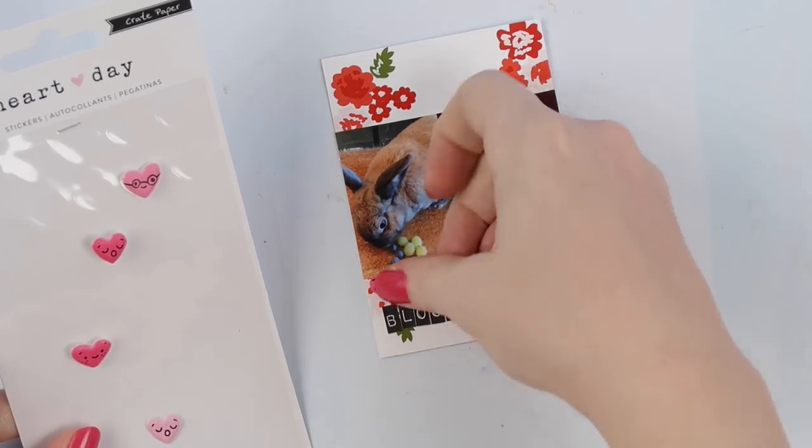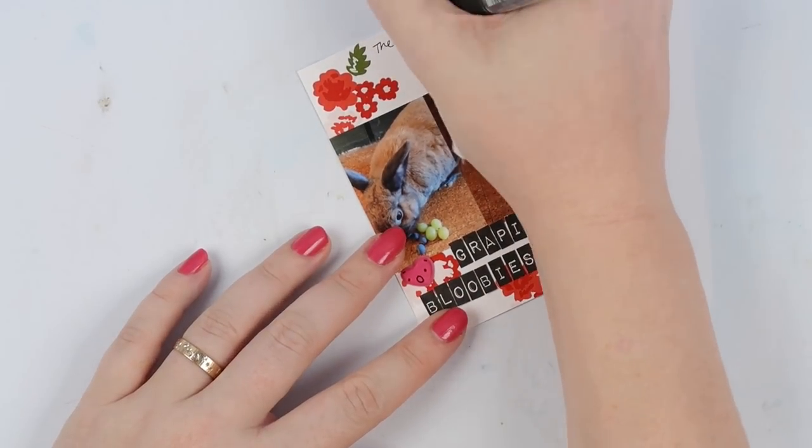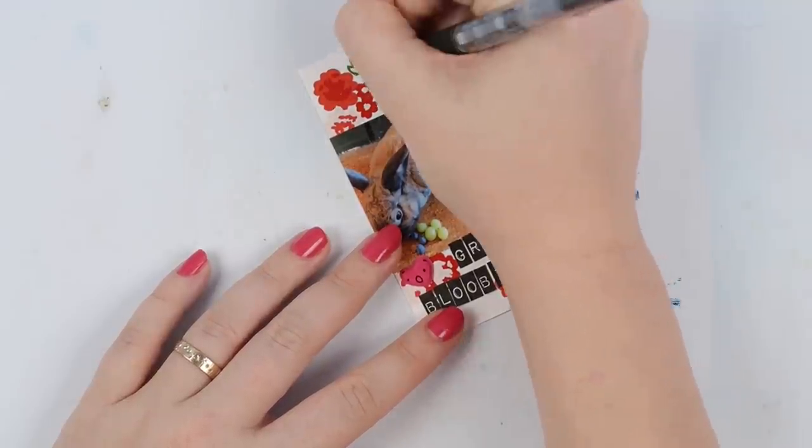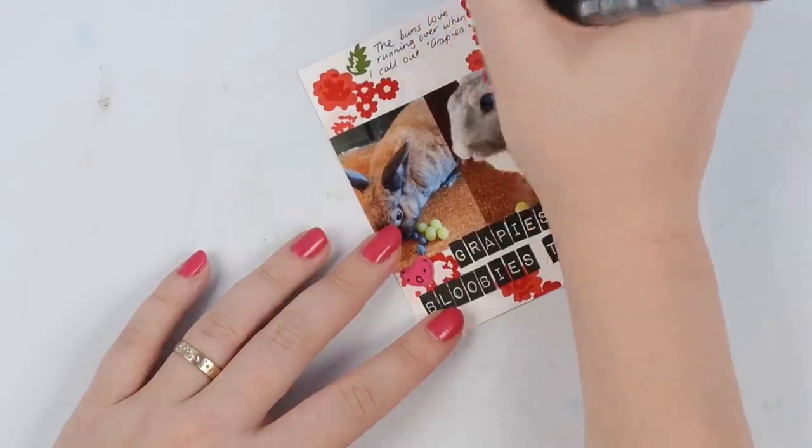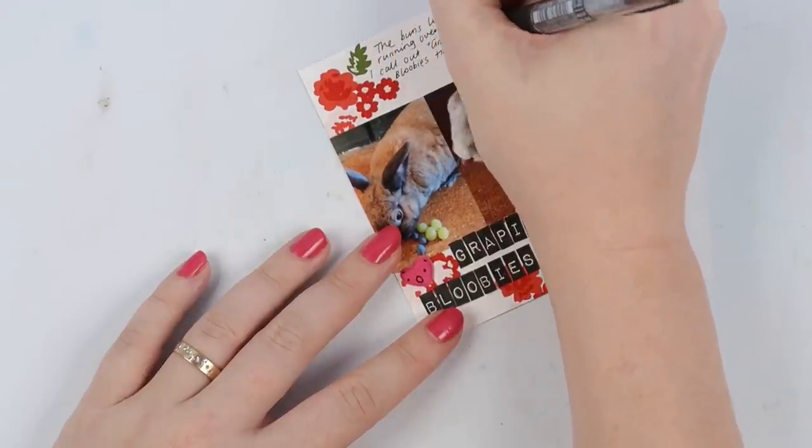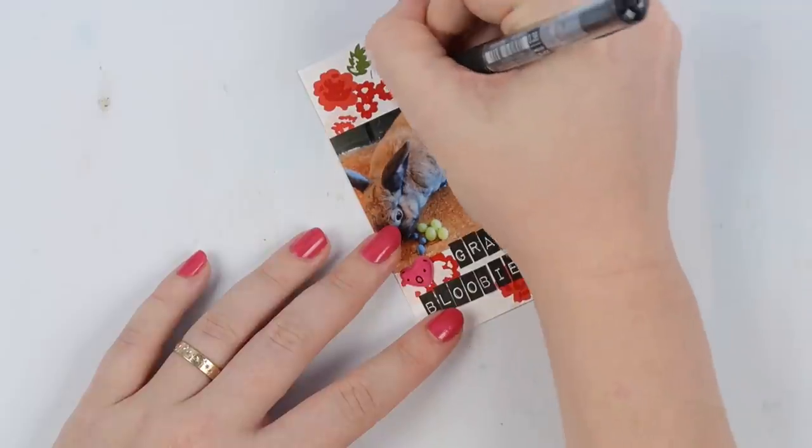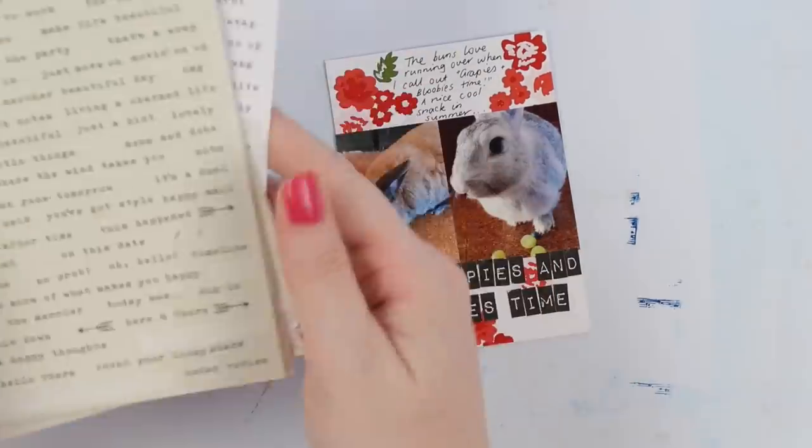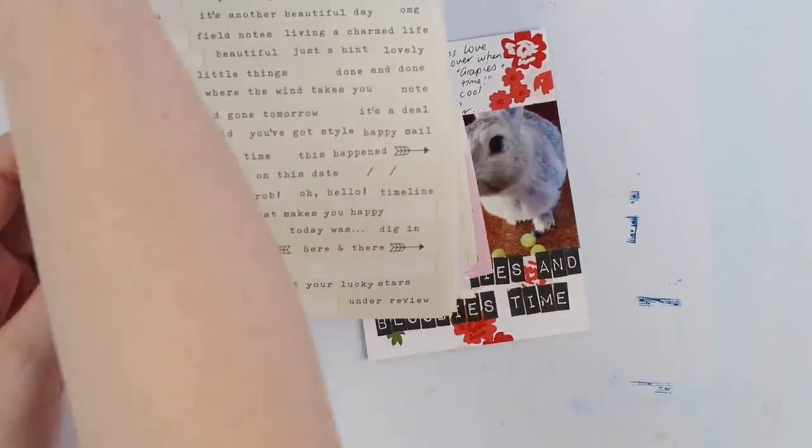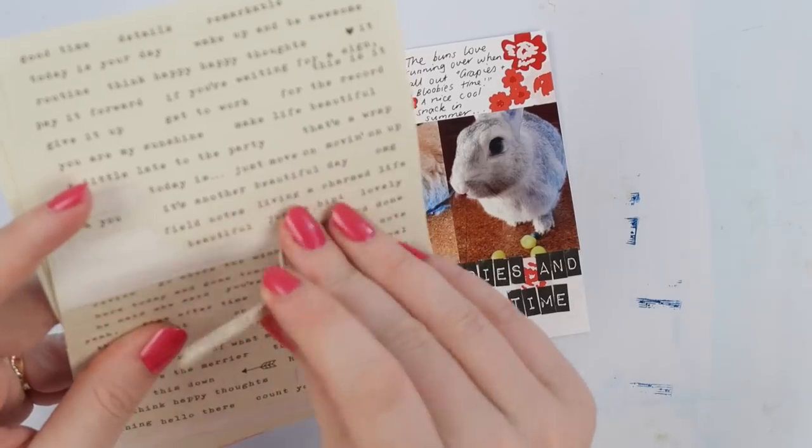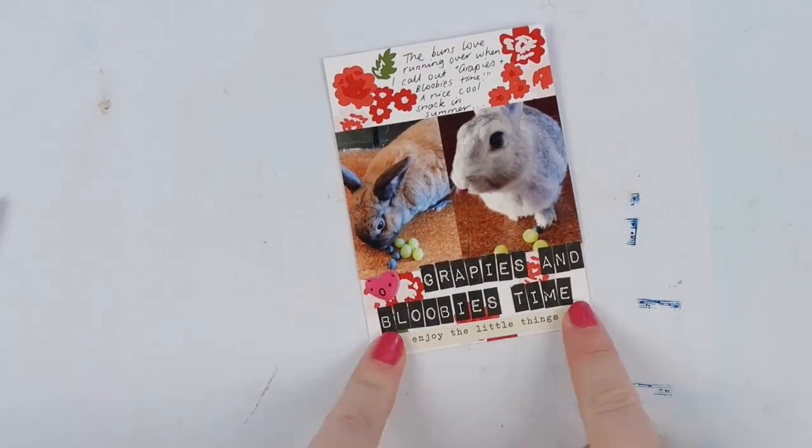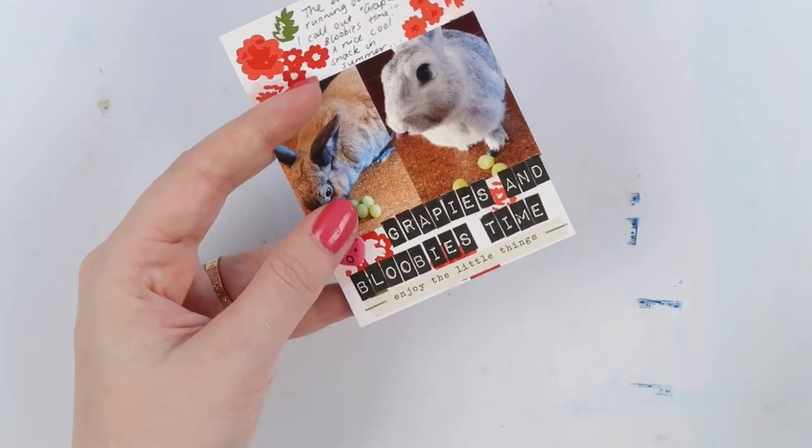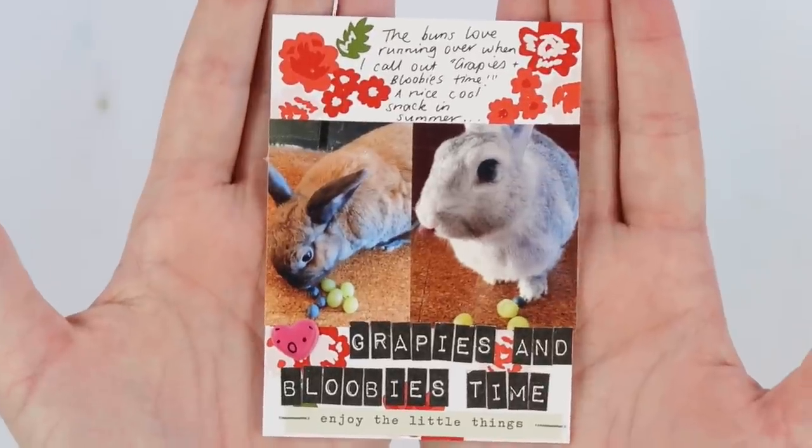This is a photo of the bunnies of course, and this layout is actually from the very end of spring so it was getting to be a little bit warm here. Blueberries and grapes were their favorite treats. We call them grapies and bluebies and they're the bunnies' favorite snack. If you say bluebies or grapies they react, and I secretly think they know what it means.